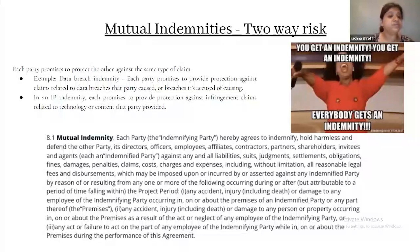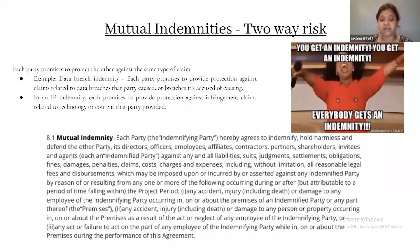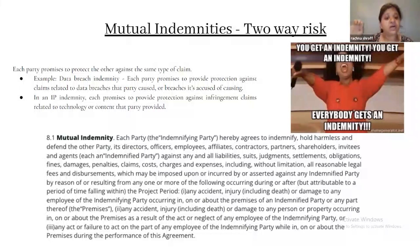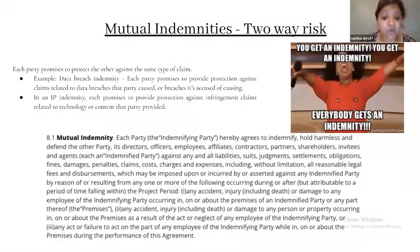This applies by reason of or resulting from any one or more of the following occurring during or after, but attributed to a period falling within the project period: one — any accident or injury, or damage to any employee of the indemnifying party occurring in, on, or about the premises; two — any accident, injury, including death, or damage to any person or property occurring on or about the premises as a result of the act or neglect of an employee of the indemnifying party; or three — any act or failure to act on the part of any employee of the indemnifying party while in, on, or about the premises during performance.